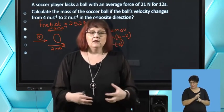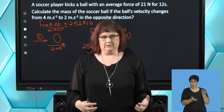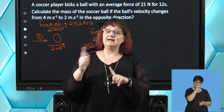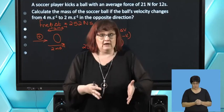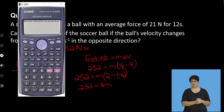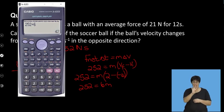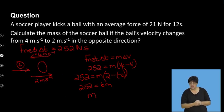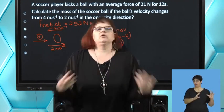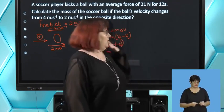Mass is not a vector — it's a scalar, and mass can only be positive. So be careful: if you get a negative, go back and check your signs and direction. Putting 252 divided by 6 into the calculator, we get 42 kilograms. In an exam, if you get 42 kilograms for a soccer ball, I'm sincerely hoping you'll notice something's wrong — soccer balls should not be 42 kilograms.